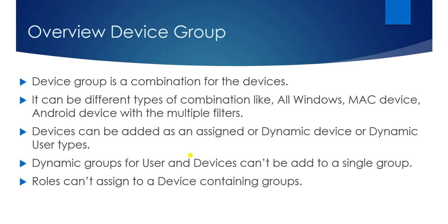We have three types of membership assignment. A dynamic group for users and devices cannot be added to a single group — you cannot create a dynamic user and dynamic device in a single group. You cannot add two types of query for device and user in a single group; that group can be either a dynamic device or dynamic user. Both types of query cannot be merged together.